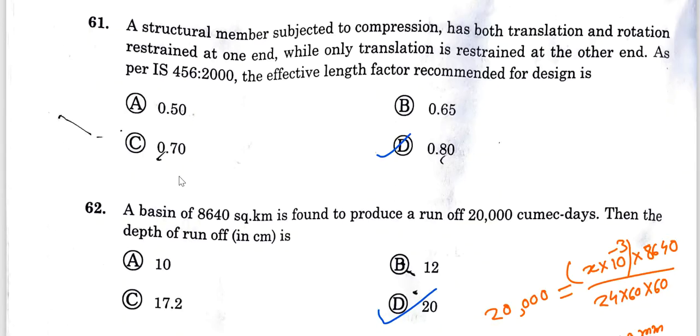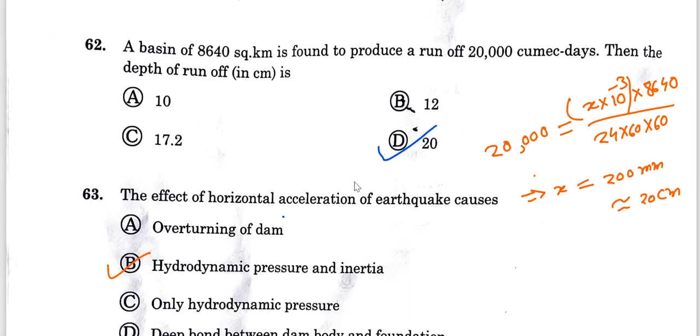Question 61: A taxation member subjected to compression has both translation and rotation restrained at one end while only translation is restrained at the other end. As per IS 456-2000, the effective length factor recommended for design is 0.80. This is the design purpose value.